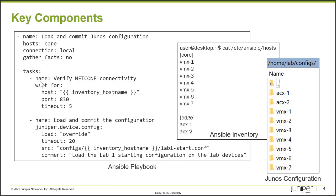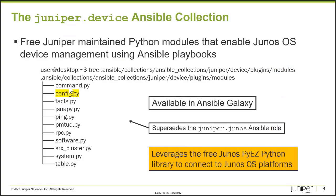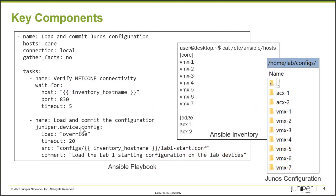That's what the built-in wait_for library enables you to do. Again, it's not necessary, but it's a best practice to just verify first. The second task is the main focus of this learning byte — we're ready to load and commit configuration. We're going to leverage the Juniper.Device Ansible Collection config module. That's the module we highlighted, and it has multiple methods available — you can load, override, merge, or replace configuration — all of the configuration options available through the Junos CLI are available here.